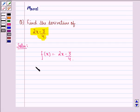We have to find f'(x) that will be equal to derivative of 2x minus derivative of 3 by 4. Derivative of 2x is 2 and derivative of minus 3 by 4 is 0.